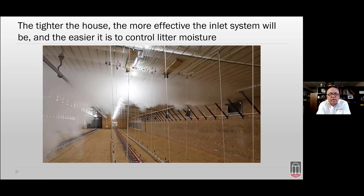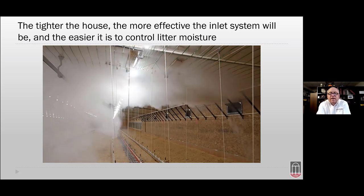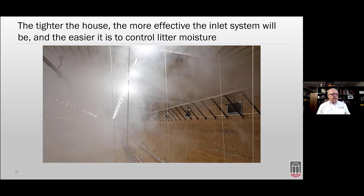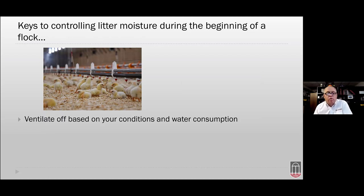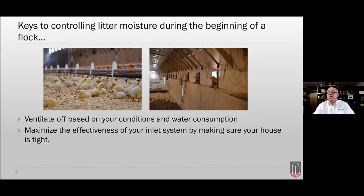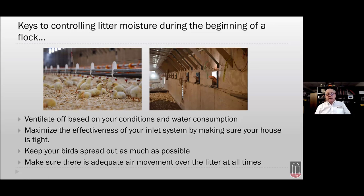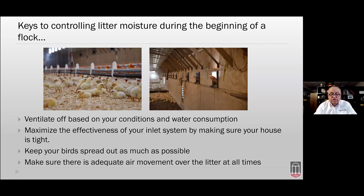The keys to controlling litter moisture during the first third of a flock: number one, ventilate based on your conditions and water consumption using the app as a starting point, tweaking with house humidity. Number two, maximize inlet system effectiveness by ensuring the house is tight. Additionally, keep bird spread as wide as possible and ensure adequate air movement over the litter at all times — topics to be covered further by Connie Moe in July. It takes all of these things to keep litter dry.